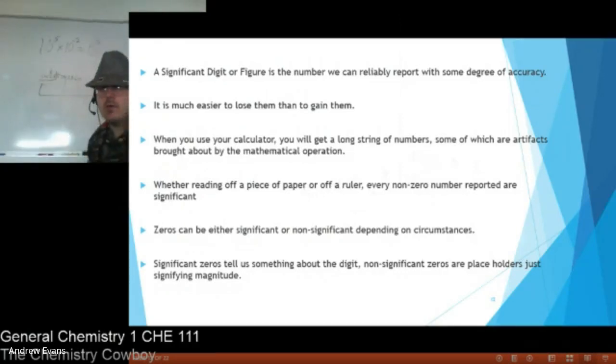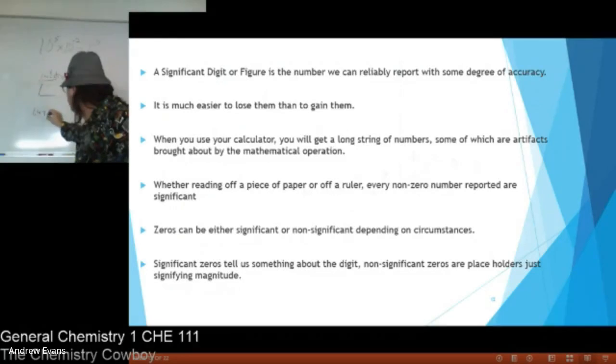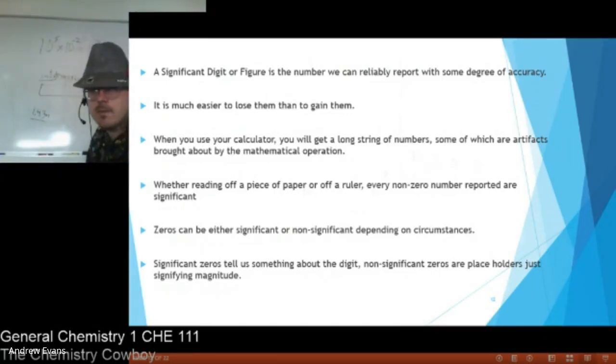So there's a rule. There's a rule that whenever we read off a piece of paper or off a ruler or other measurement device, every non-zero number reported is significant. So if I gave you the distance of this board is 1.43 meters, I'm giving you all the significant digits you need. All those are given. Every non-zero number. If I'm reading this off a ruler and I can only go out to 1.43 places, that's as far as we're going to go.